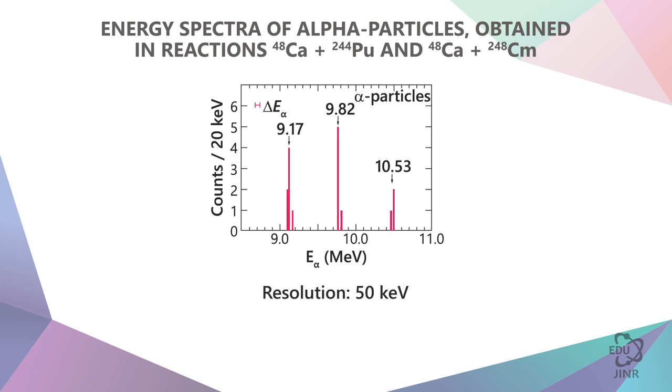The resolution of our apparatus in these experiments for measuring the alpha decay energy is 50 kilo electron volt. The energy we are talking about is 10 mega electron volt. This means, with an accuracy of 0.5% in energy, it repeats the steps of the previous decay.